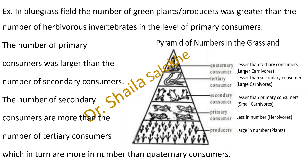For example, in bluegrass fields, the number of green plants or producers was greater than the number of herbivore invertebrates at the level of primary consumers. The green grass represents producers, which are larger in number than the herbivore primary consumers. The number of primary consumers was larger than the number of secondary consumers. The number of secondary consumers is larger than tertiary consumers, and so the number of consumers goes on decreasing as we go towards the apex.